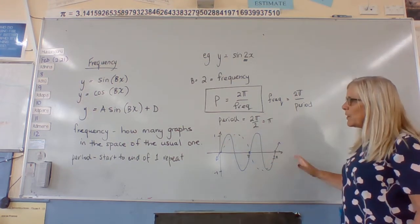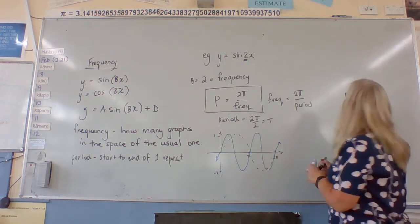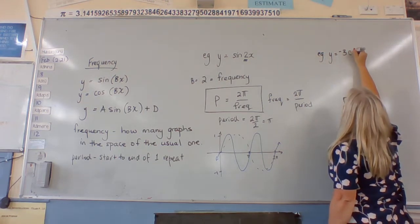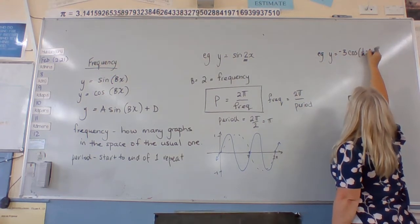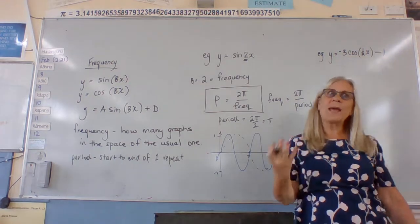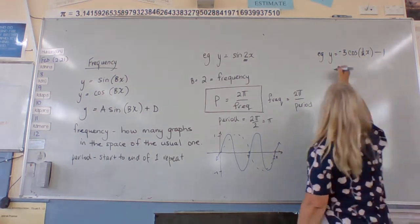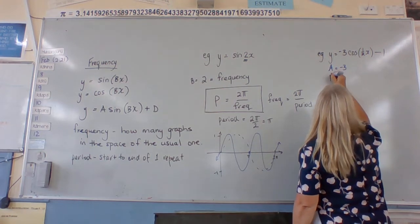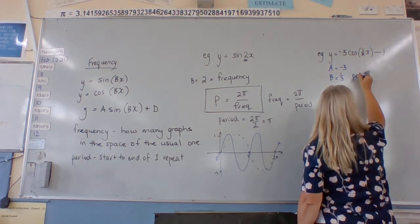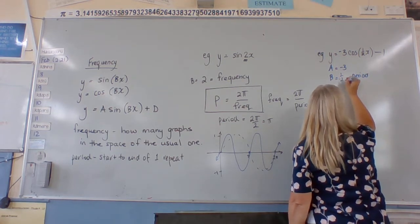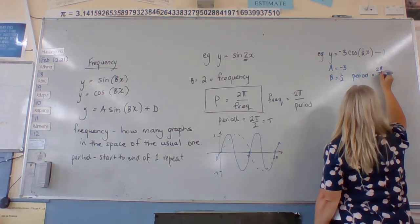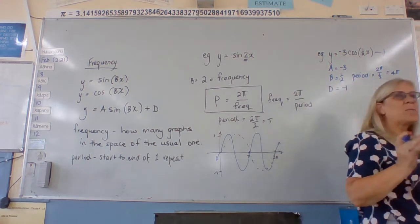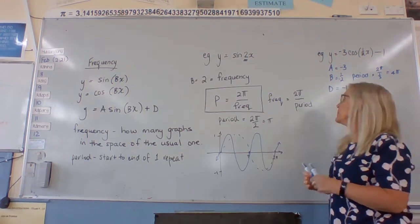So that's how it works for a wrapped-up one. We might have y = -3·cos(½x) - 1. Now we've got a, b, c, and d and we need to find all of them. So: a = -3, b = ½, so the period equals 2π divided by ½, which equals 4π, and d = -1.